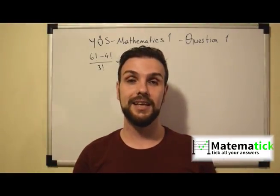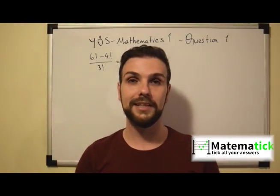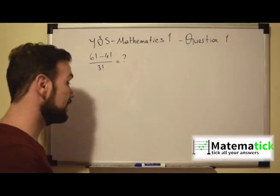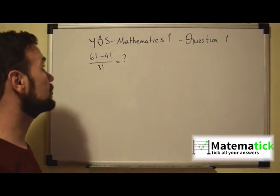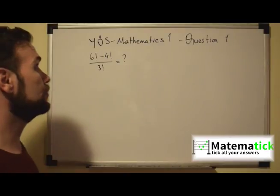So let's see what the question asks us and let's see the process we need to follow to get to the right answer. In this question we have 6 factorial minus 4 factorial over 3 factorial and what is that equal to?